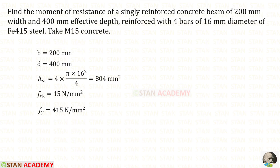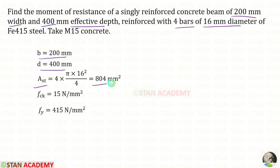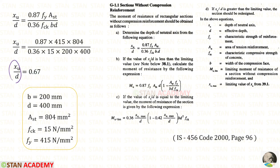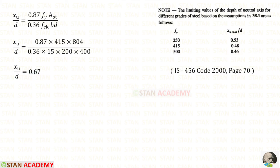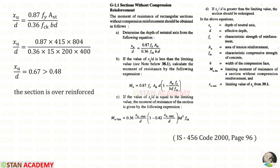For the third problem, B = 200 mm, effective depth D = 400 mm, reinforcement is 4 bars of 16 mm diameter. FCK = 15, FY = 415. Calculating XU/D gives 0.67, while XU max/D = 0.48. Since XU/D is greater than the limiting value, the section is over-reinforced.